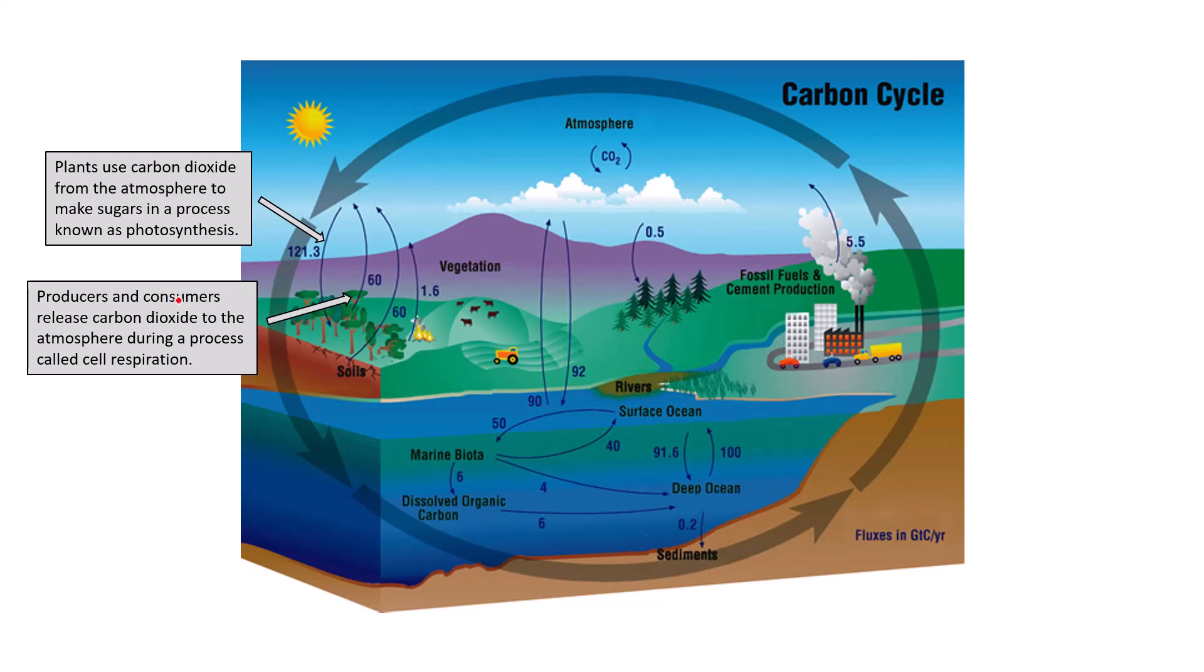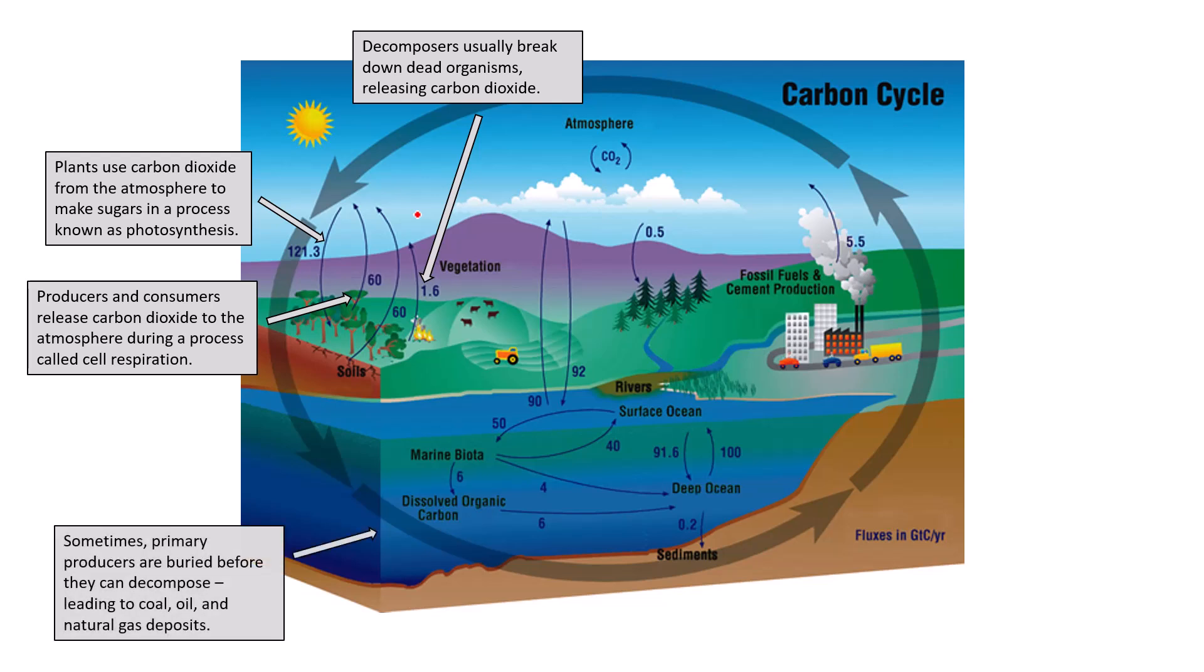Once the producers make the glucose via photosynthesis, the producers and consumers are going to release carbon dioxide to the atmosphere during a process called cellular respiration. Decomposers usually break down dead organisms releasing carbon dioxide as well. Part of the combustion or the release of carbon compounds comes in the form of cellular respiration. It can also come from decomposition. The carbon can also be released from biomass utilizing just normal fire and combustion. When fire burns organic material, it's releasing carbon dioxide back into the air. Where did that carbon come from? It was once locked in the organic compounds that that living thing was made of.